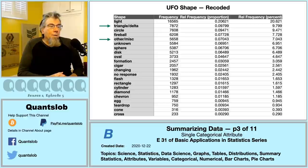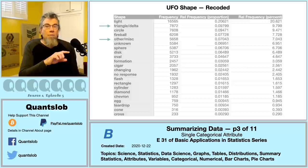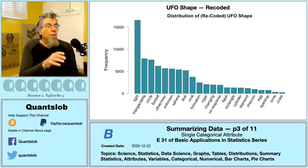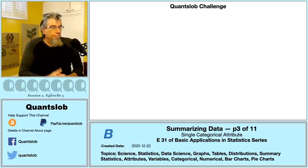Here you can see the arrows showing our two new collapsed categories — a little cleaner and easier to look at. 'Light' happens to be the most popular reported shape, which isn't really a shape at all. Here is the distribution of our recoded UFO shape attribute as a vertical bar chart, with category names plotted at the bottom along the x-axis at an angle — a nice trick that allows readable labels while conserving space. Now it's time for our QuantSlob challenge: what is wrong with this pie chart?